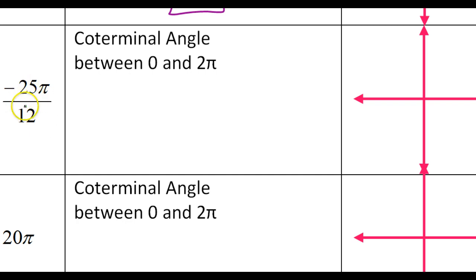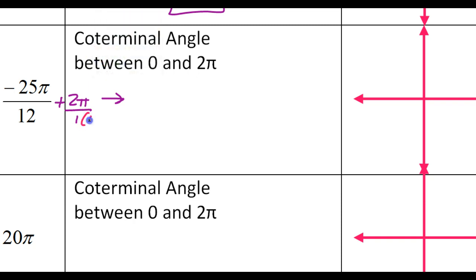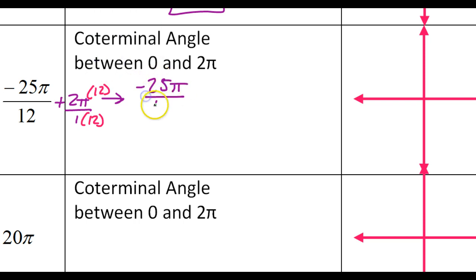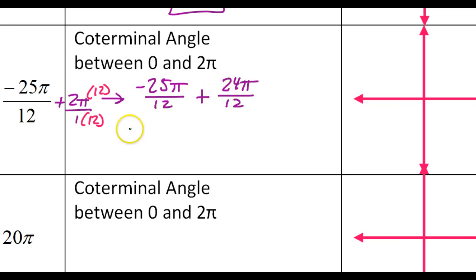Let's look at this next angle. I have a negative angle again. If I want to get it between 0 and 2 pi, I need to add a full revolution by adding 2 pi. So I'll take this and add 2 pi to it. Remember, 2 pi is 2 pi over 1, so we need like denominators — I'm going to do 12 and 12. This is going to be negative 25 pi over 12 plus 24 pi over 12. Negative 25 plus 24 gives a negative number — negative 1 pi, or negative pi over 12. So that's still negative.